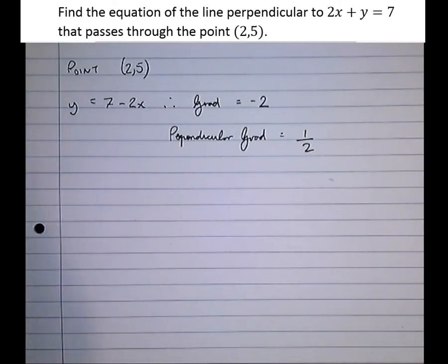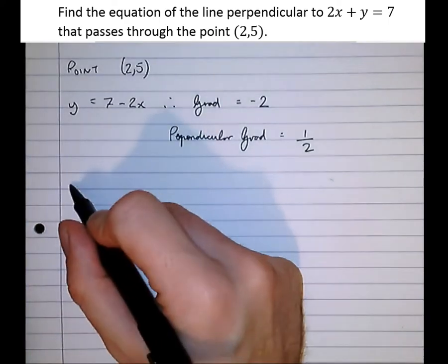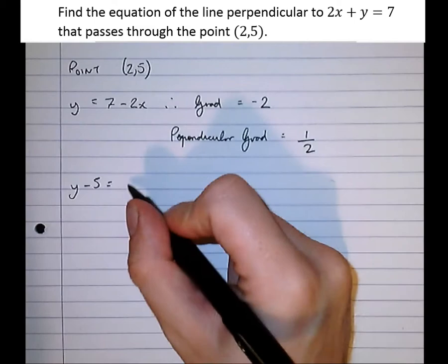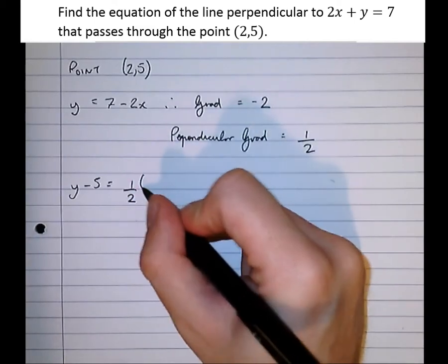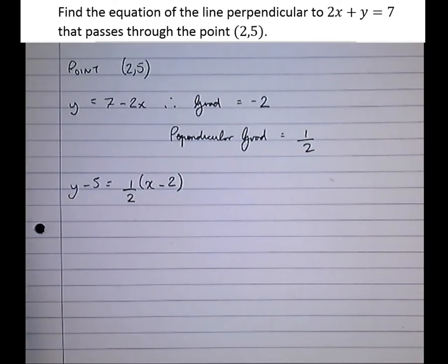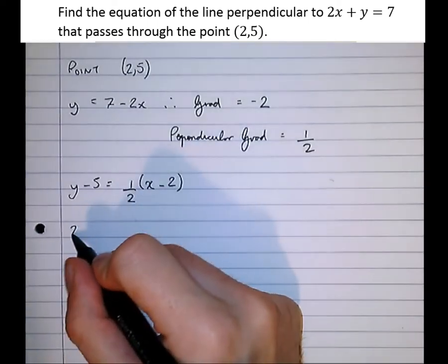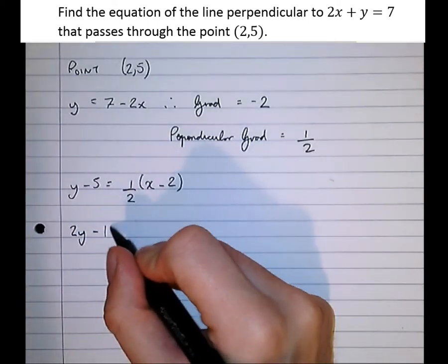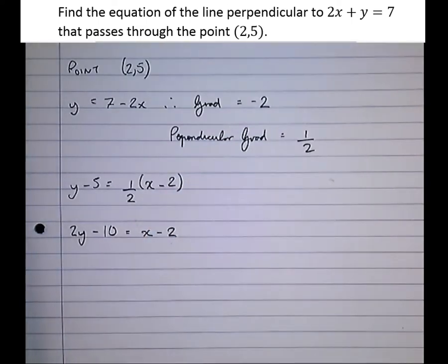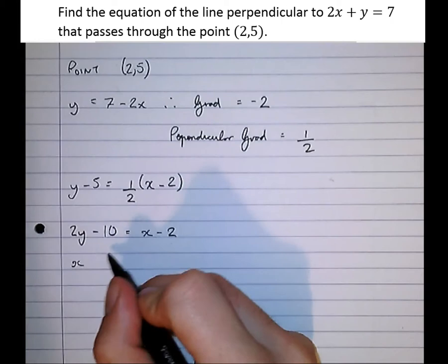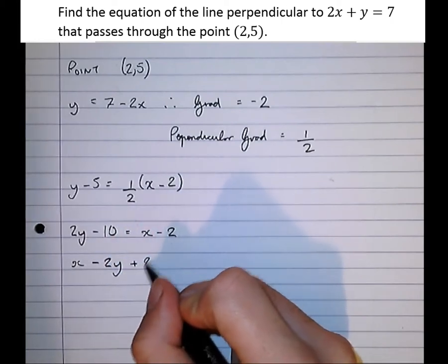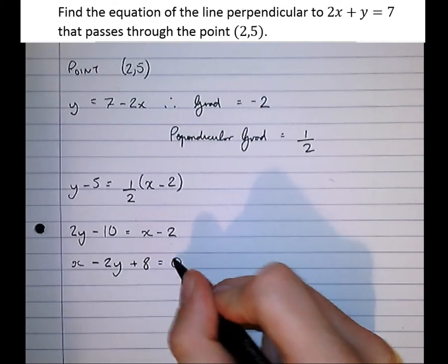Right, next, just plug it into the standard equation. Y minus the y coordinate equals gradient times x minus the x coordinate. Times it by 2, we get 2y minus 10 equals x minus 2. Then rearrange it into a nice format: x take 2y plus 8 equals 0.